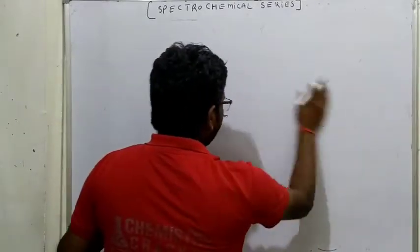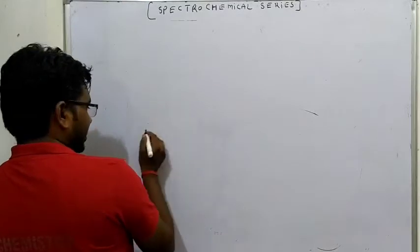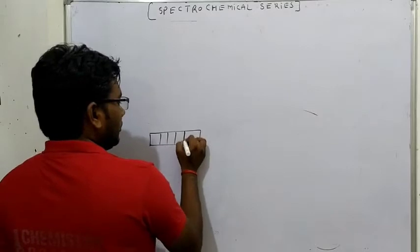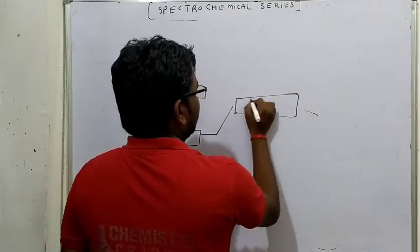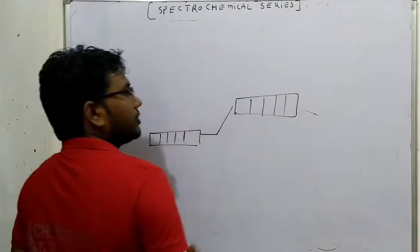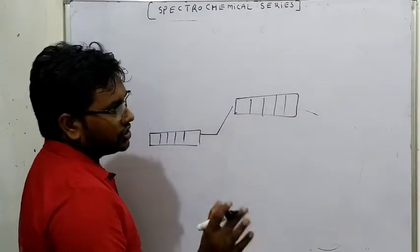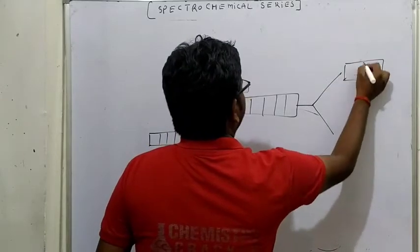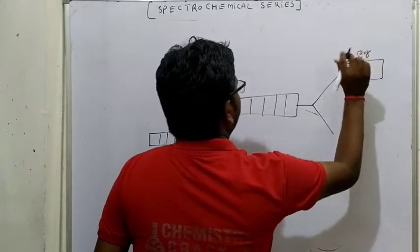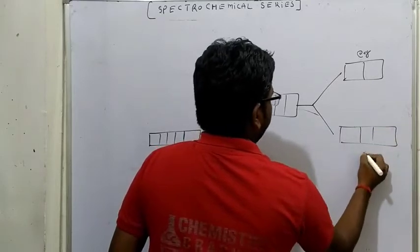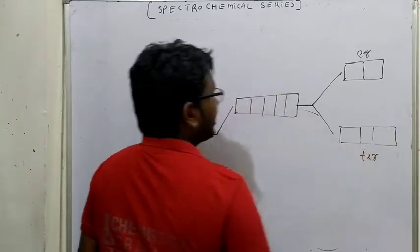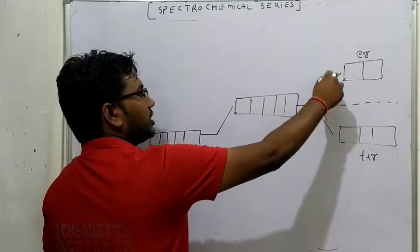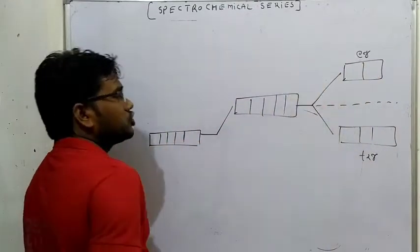जब Octahedral Complex का formation होता था तो होता क्या था - जो D orbitals आपके होते थे वो सब के सब excited होते थे, सब एक common level पर आते थे। D orbital दो sets में होता है यह बात हमने बताई थी। Octahedral complex के लिए Eg ज्यादा high split होता था, और T₂g आपके नीचे आ जाते थे क्योंकि वो low splitting करते थे, low repulsion करते थे। यह हमारा energy का redistribution होता था।